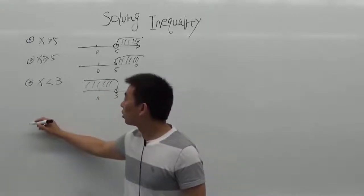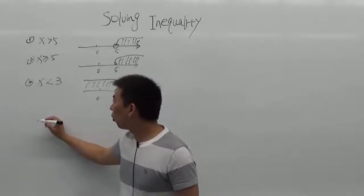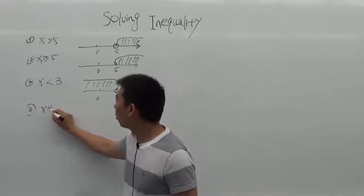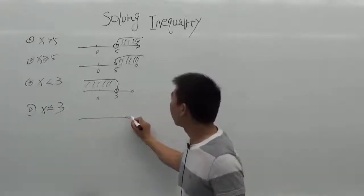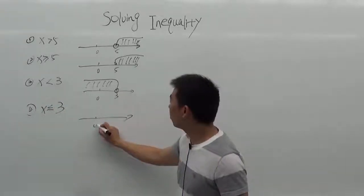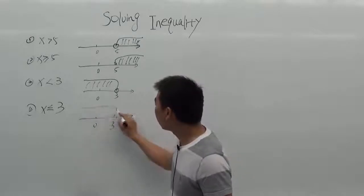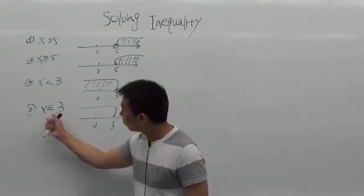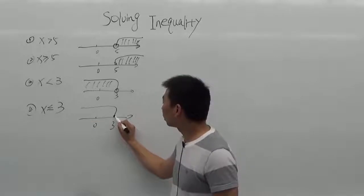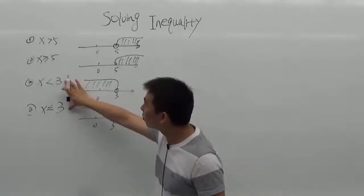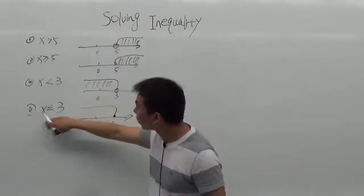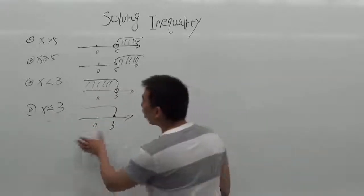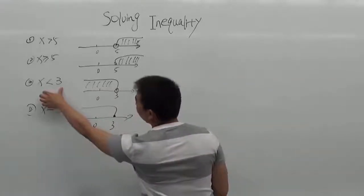The fourth one uses the less than or equal sign. Let's say x less than or equal to 3. The same — all the numbers are less than 3 — but because x could be number 3, so it's a solid dot. The difference between less than and less than or equal is that the less than or equal includes number 3, while less than does not.